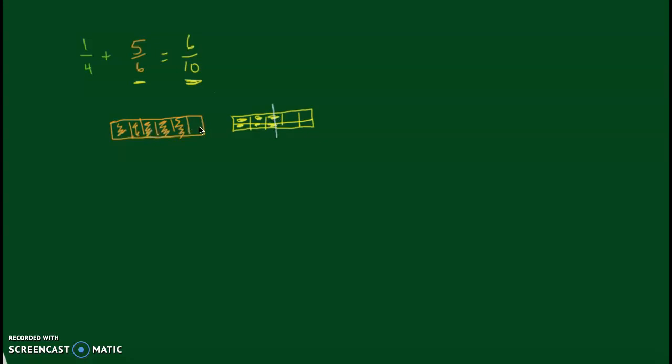But 5 sixths is close to 1. So how could we have a fraction that's close to one whole and put something more with it and get a smaller answer? That doesn't make sense. So that shows that 1 fourth plus 5 sixths doesn't make sense to have an answer of 6 tenths because how do you put something with something bigger and then get something smaller? So I want you to think about those types of problems using estimating and thinking and not just looking at the algorithm.